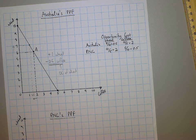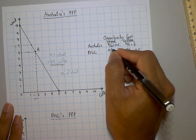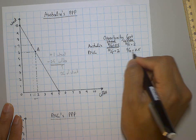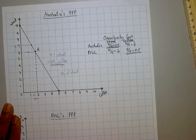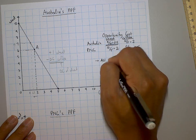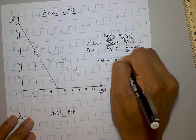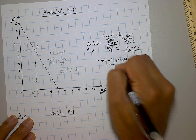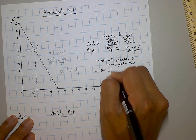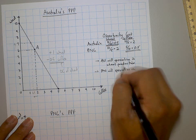Once you've drawn the table, you can choose which country should specialise in producing which good. Circle or underline the good where each country has the lower opportunity cost. Australia will specialise in wheat production, and PNG will specialise in coffee production.